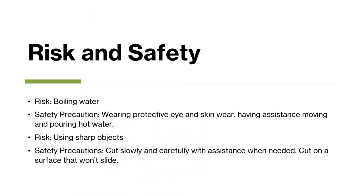The two main risks in this experiment were boiling water and using sharp objects to cut the fruit. When boiling the water, I made sure to use protective skin and eyewear to avoid hot water splashing. When moving and pouring the hot water, I poured in a safe area and moved carefully with two hands under adult supervision. When using sharp cutlery to cut the fruit, I made sure to use two hands, cut carefully and slowly, and also had adult supervision.